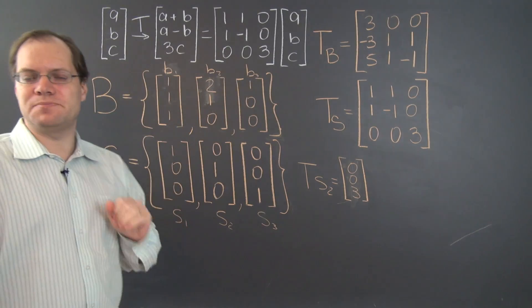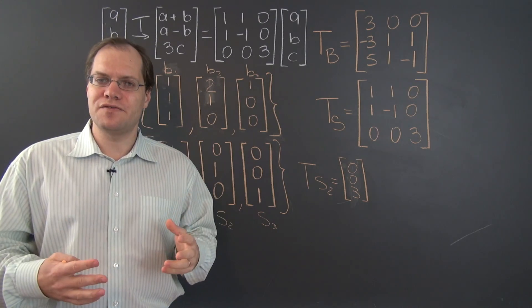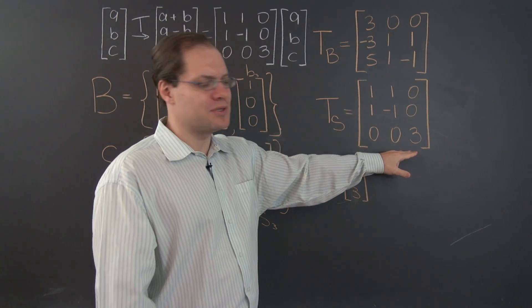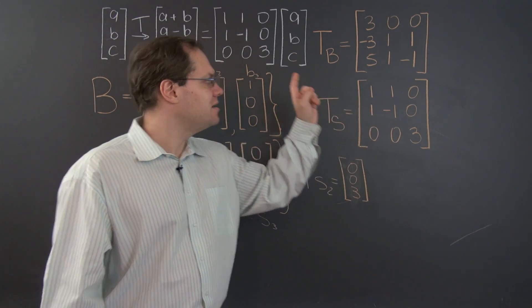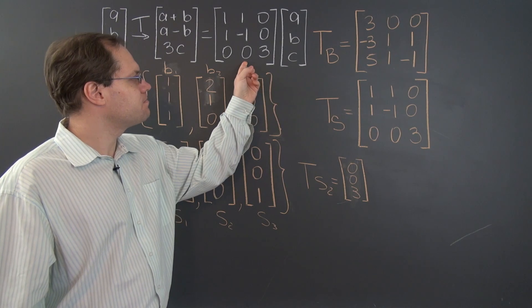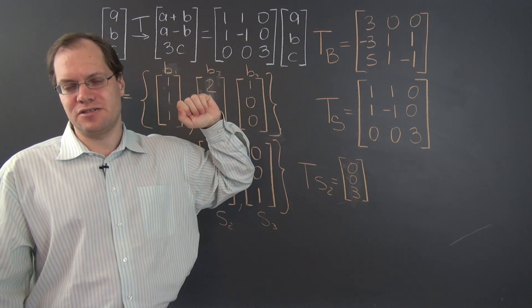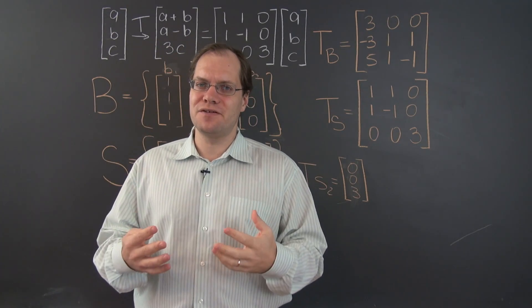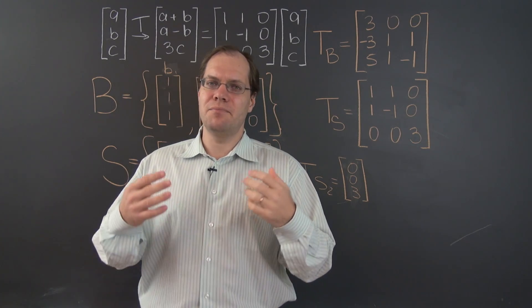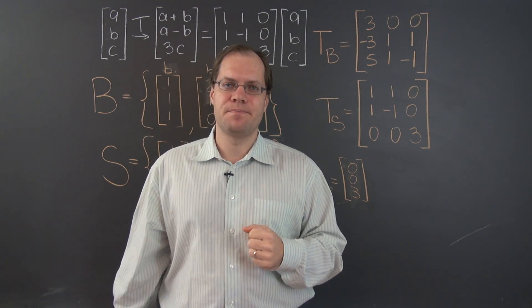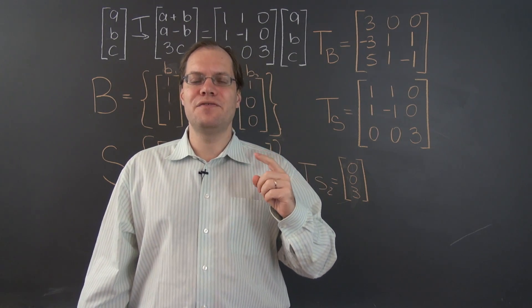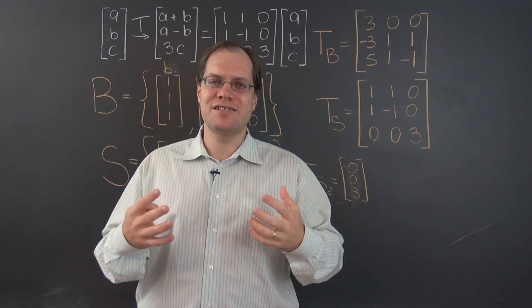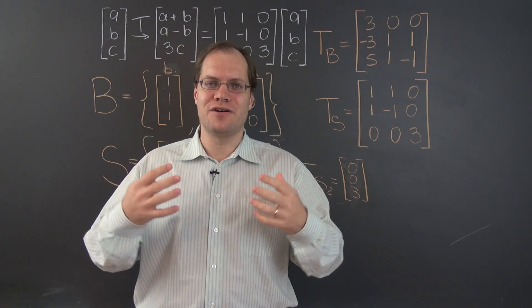So the standard basis has many special features. And one of them is that with respect to this basis, the matrix that represents the linear transformation happens to be the exact same matrix as the one defining the transformation. So it's a very special case. Typically that matrix is different. But in this one special case, the matrix is the same. All right. Next, we'll consider an even more special basis. And that will be food for lots of thought and fodder for a great discussion.